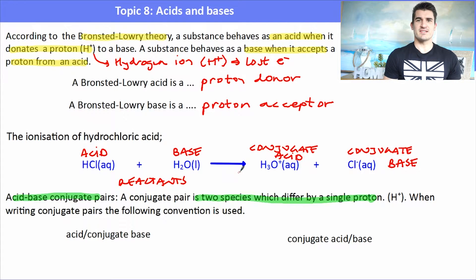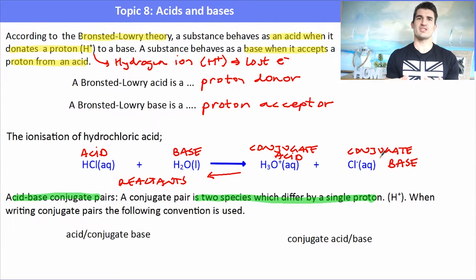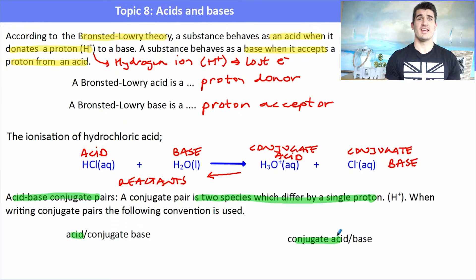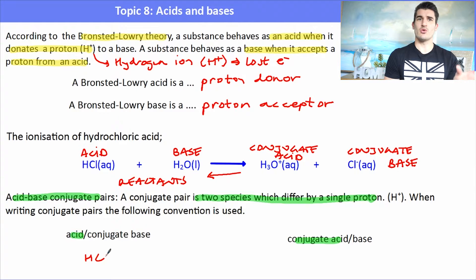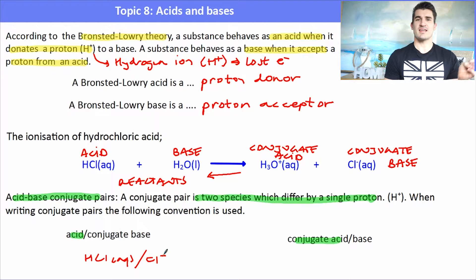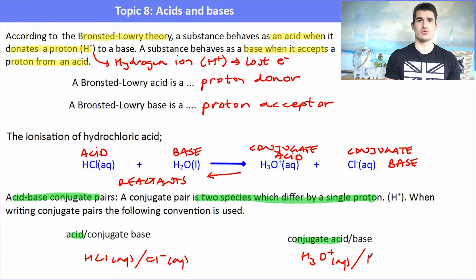The convention is to write the acid part of a conjugate pair first. If we reverse the reaction, the conjugates would need to act as acid or base in the reverse direction — that's why we always write the conjugate pair starting with the acid. So our acid/conjugate base pair is HCl and Cl⁻, and our conjugate acid is H₃O⁺ with our base H₂O.